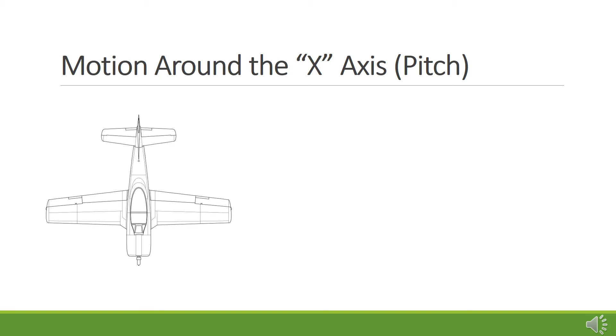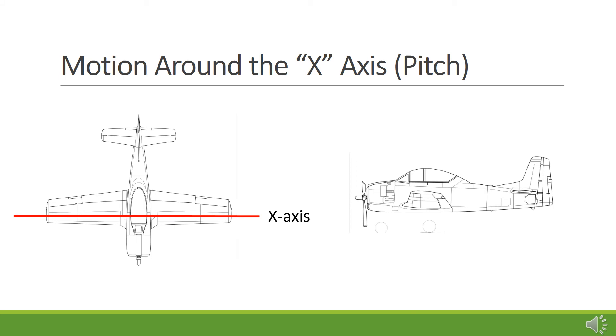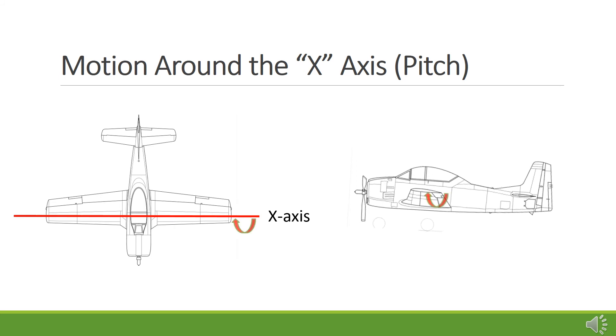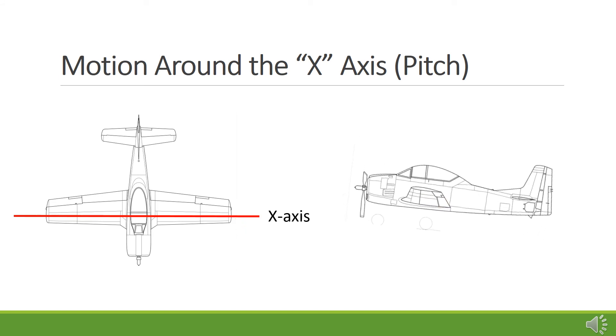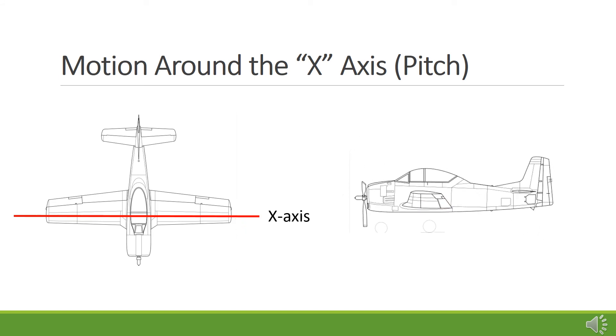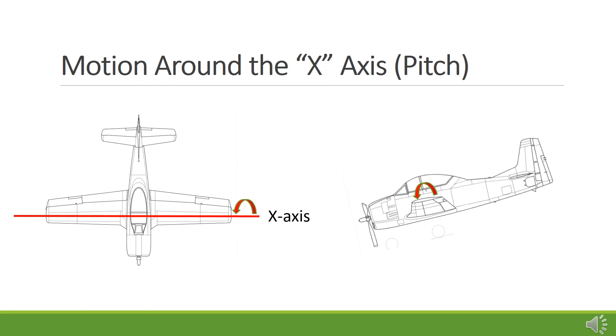Motion around the X axis is referred to as pitch. Changes in the controls that manage pitch would cause the aircraft to nose up or climb. A different change to these same controls would cause the aircraft to nose down or descend.